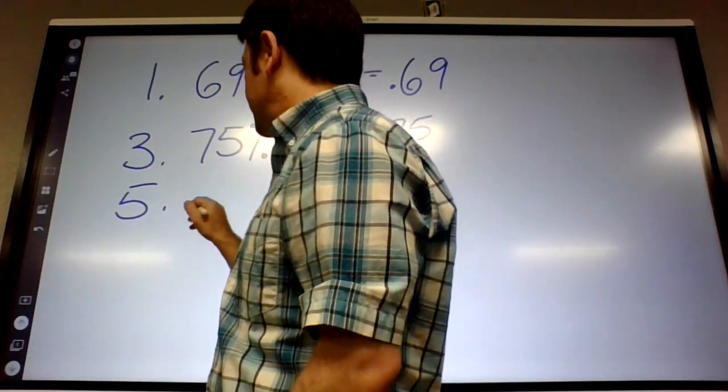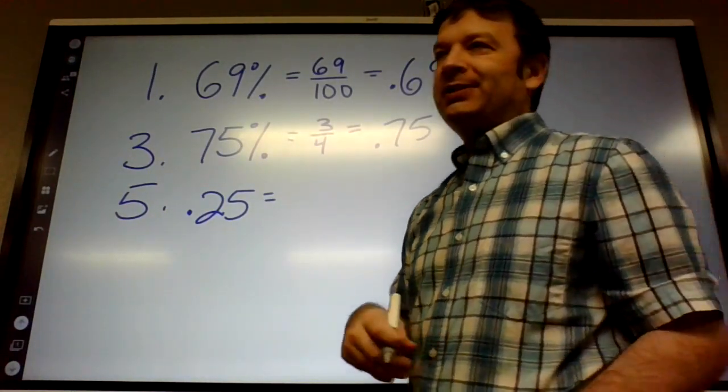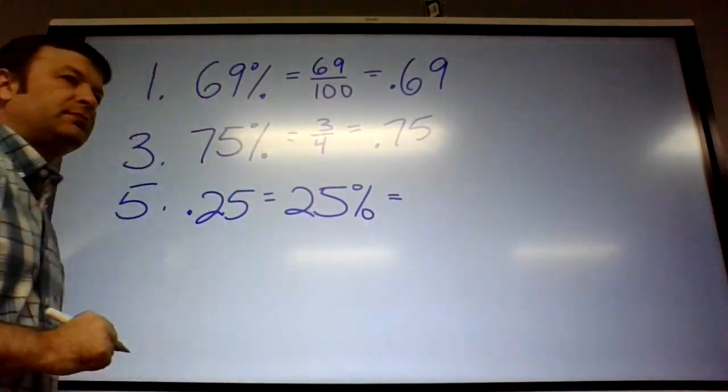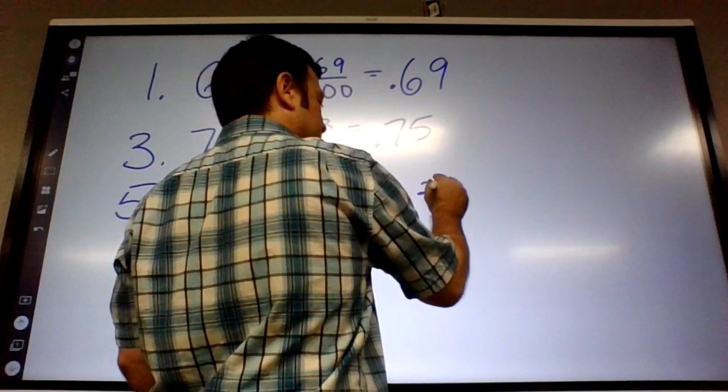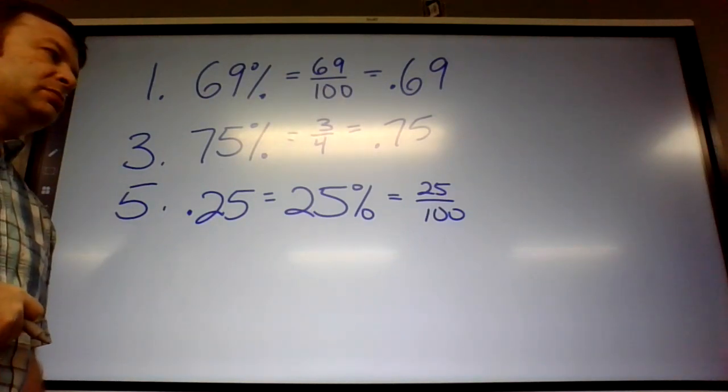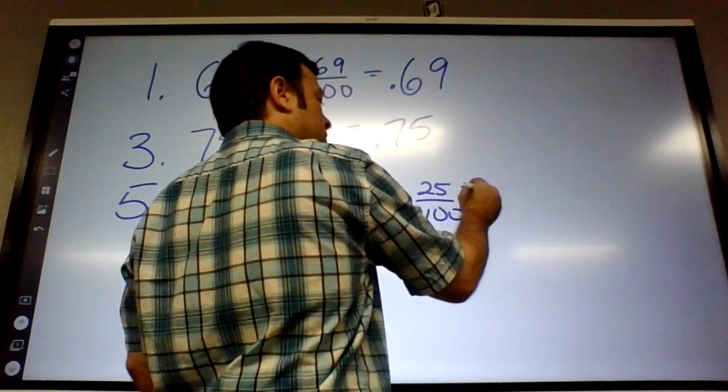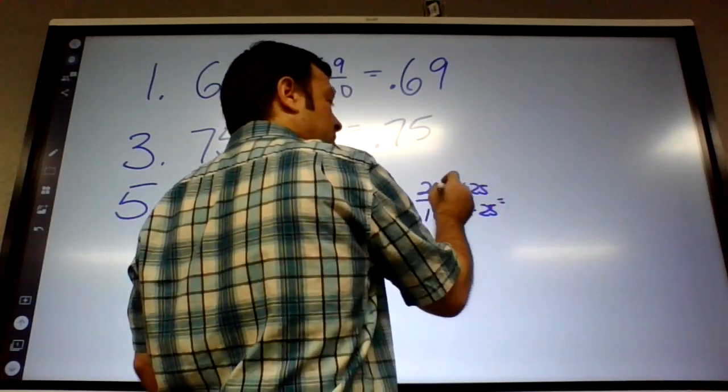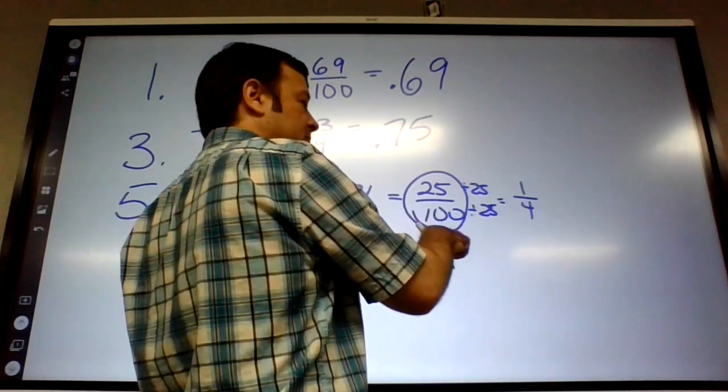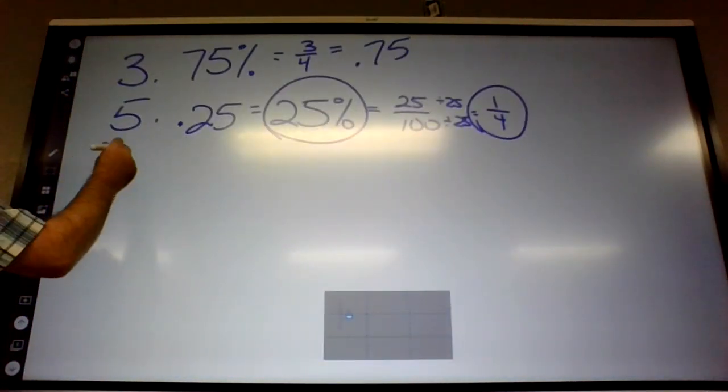Number 5, jumping to decimals. Here's another common number, 0.25. Atticus, what would 0.25 be as a percent? 25%. And what is it as a fraction? 25 over 100. Do you know what that reduces to? So, how many quarters are in a dollar? 4. So if we divide by a quarter here, we get 1 over 4. Make sure you reduce it or I have to take half off on those.